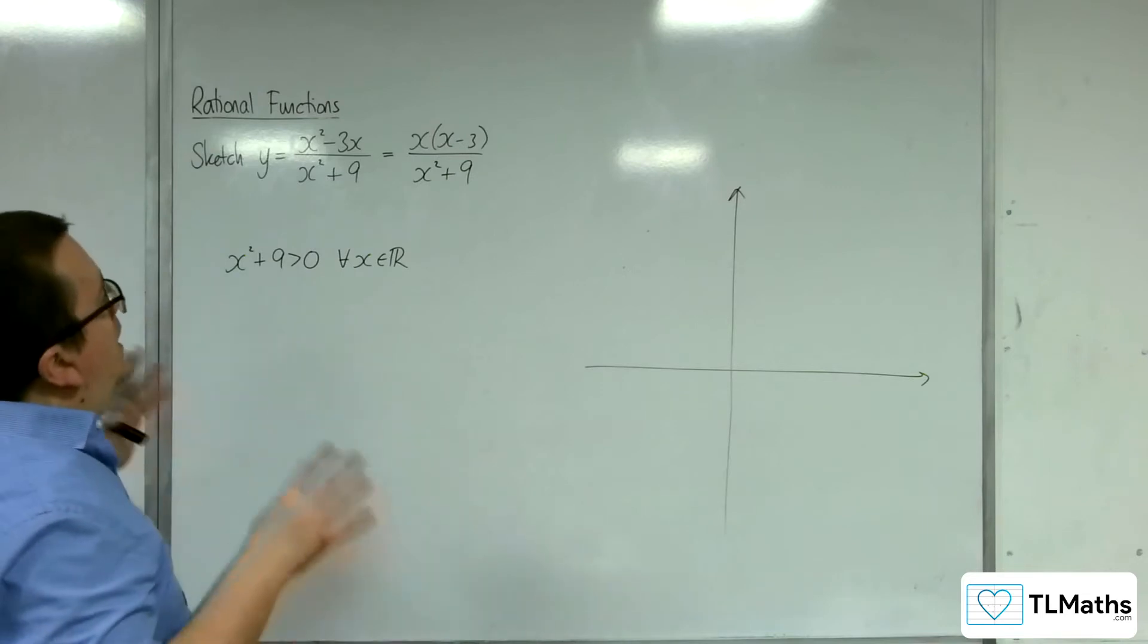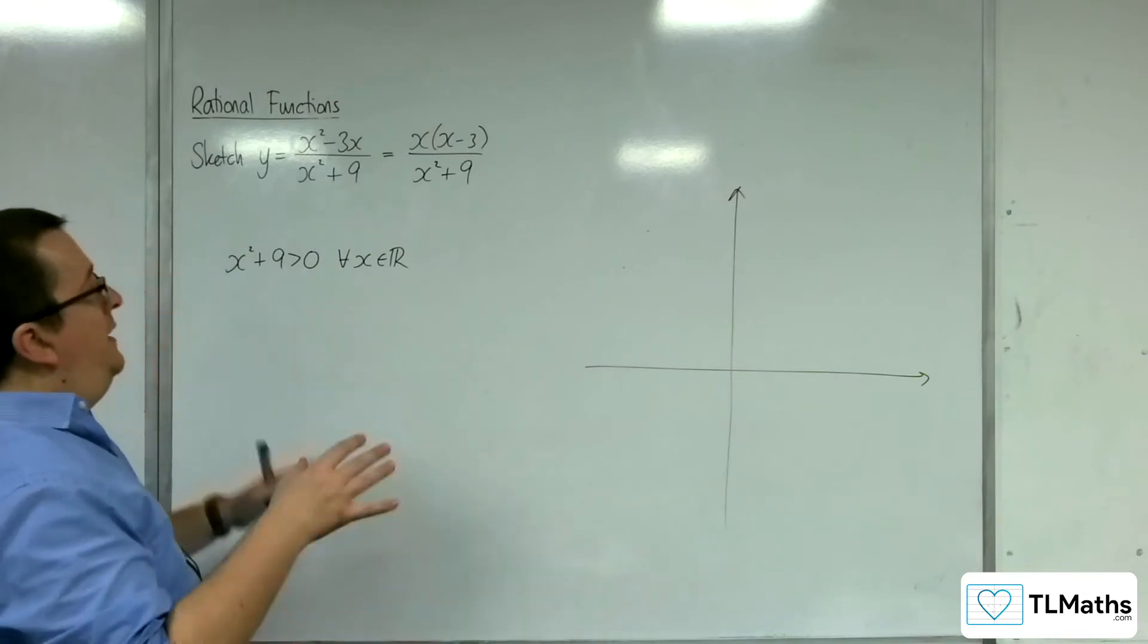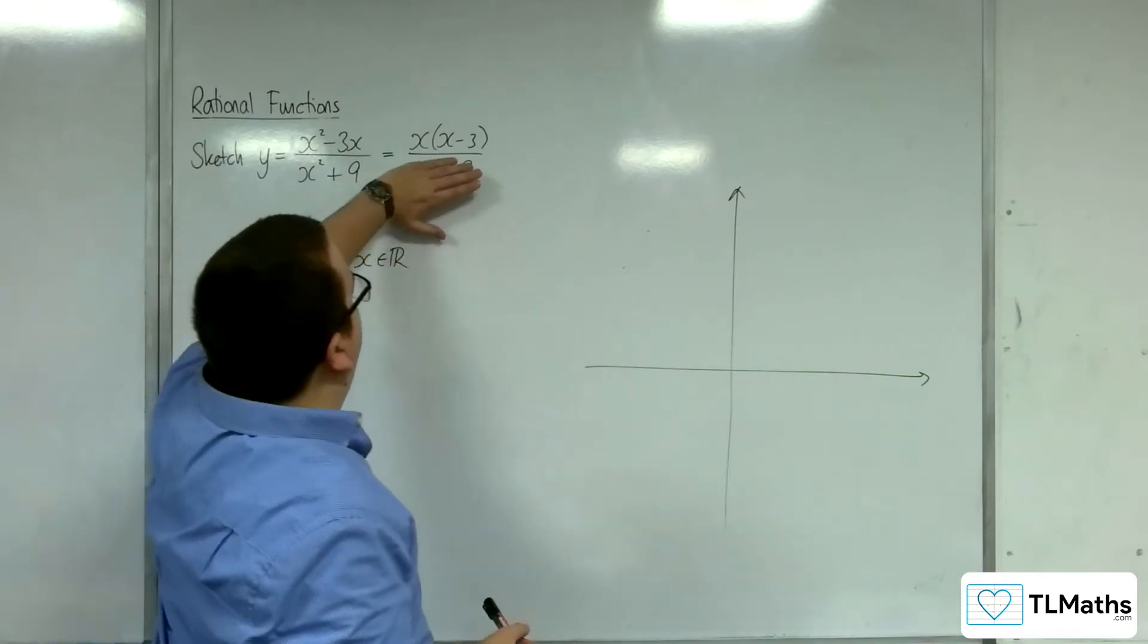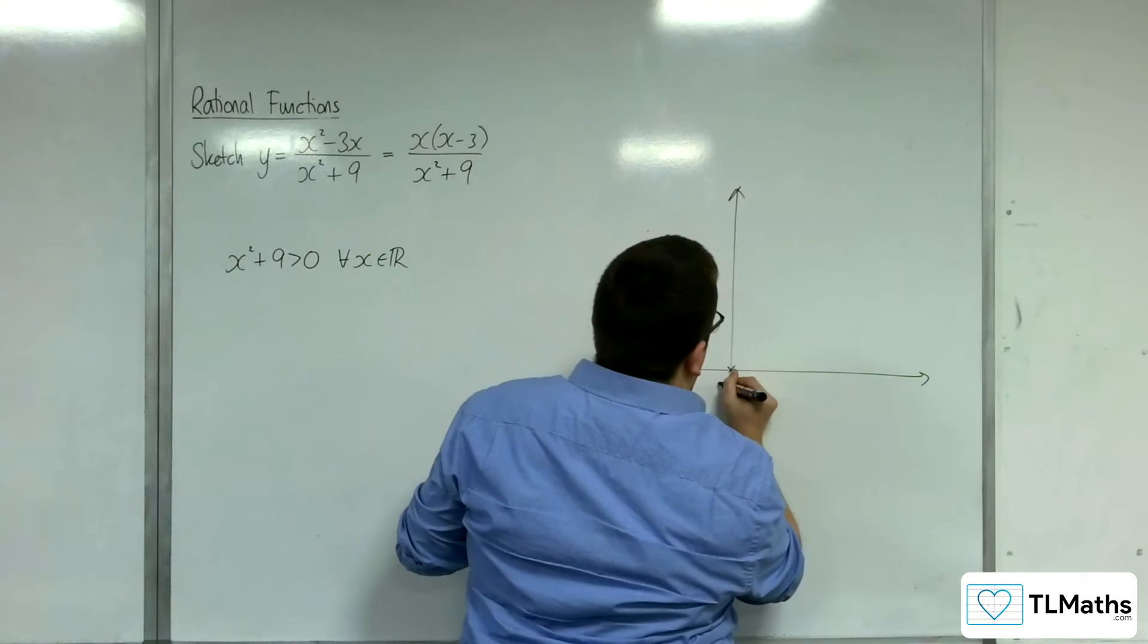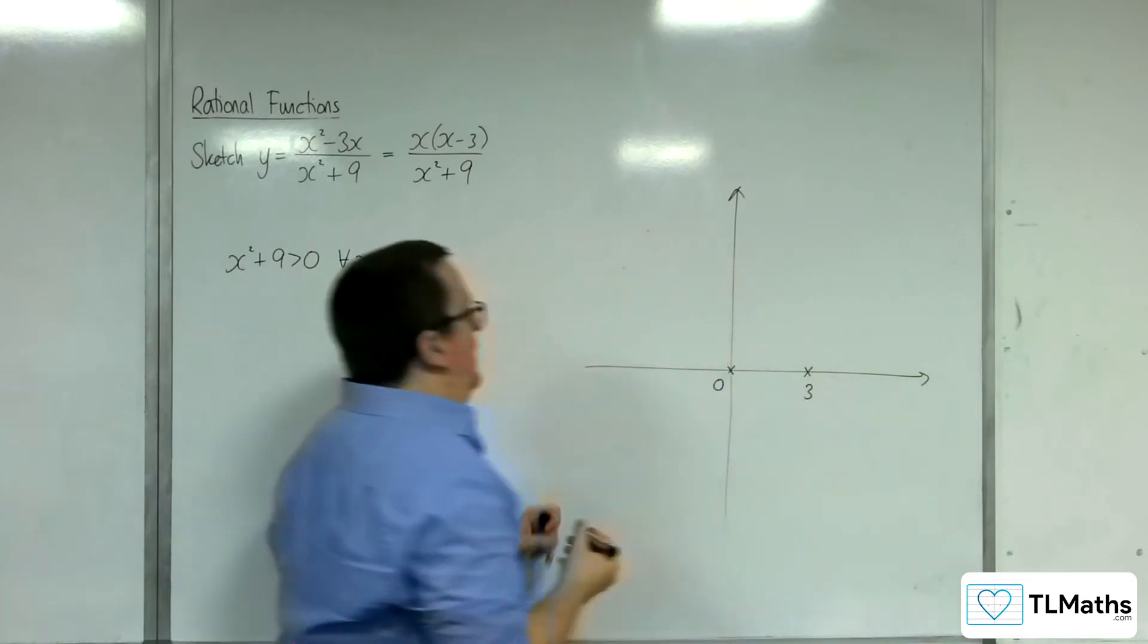How about are there any points where it crosses the x-axis? Yes, that's when the numerator is 0, so that'd be at 0 and 3. So 0 and 3 where crossing the x-axis.